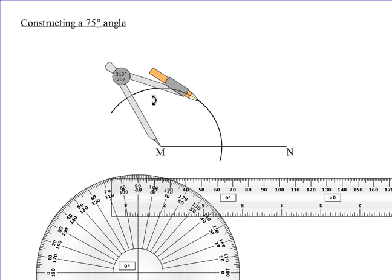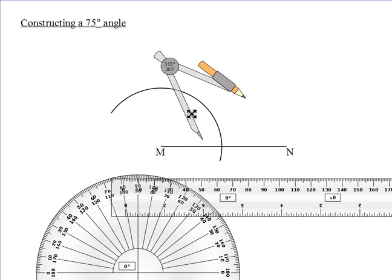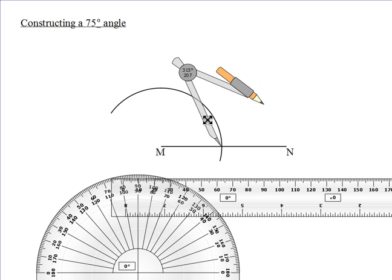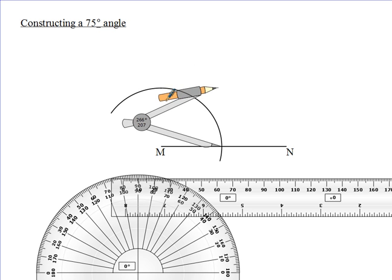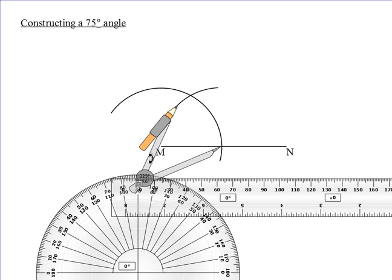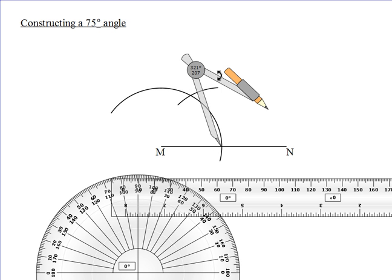And of course your line is going to intersect MN, and that intersection we will use as a center to scrub another arc. We don't need to make it large, just to get the intersection.